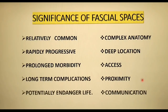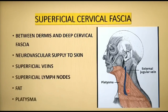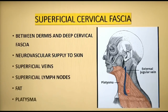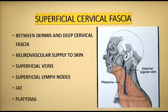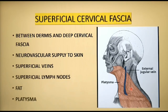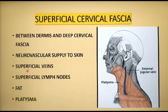Let's have a look at the cervical fascia in detail. Cervical fascia is divided into superficial cervical fascia and deep cervical fascia. Superficial cervical fascia is a thin layer of subcutaneous connective tissue that lies between the dermis of the skin and the first layer of deep cervical fascia, which is the investing layer.